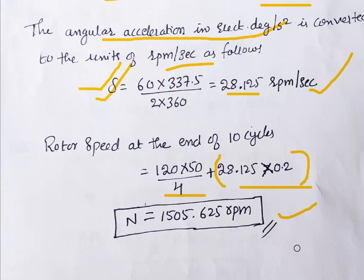These are the simple problems on the swing equation, sufficient for the exam. If you want more problems, the reference books used here are Nagrath and Kothari. You can also refer to the Kimbark book and Stevenson's book for more problems. Thank you. In the next class, we will study the power angle equation.